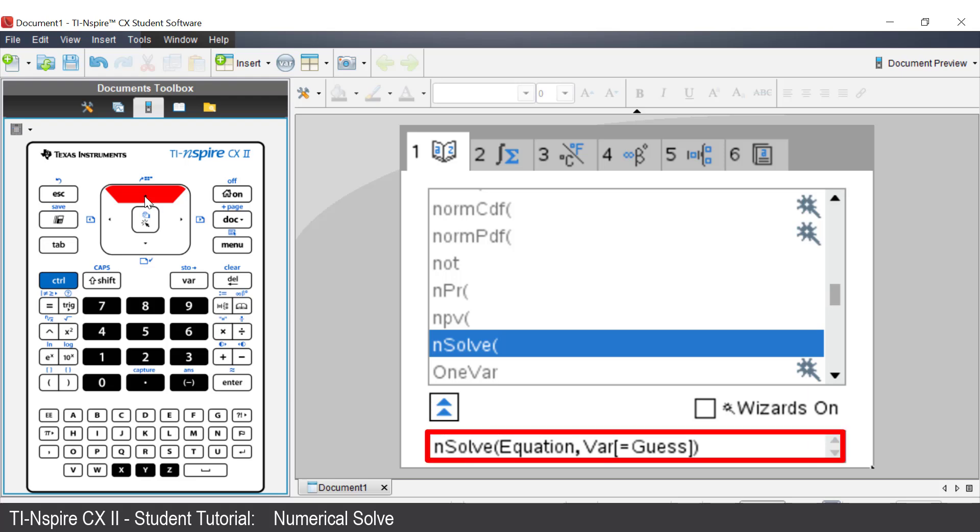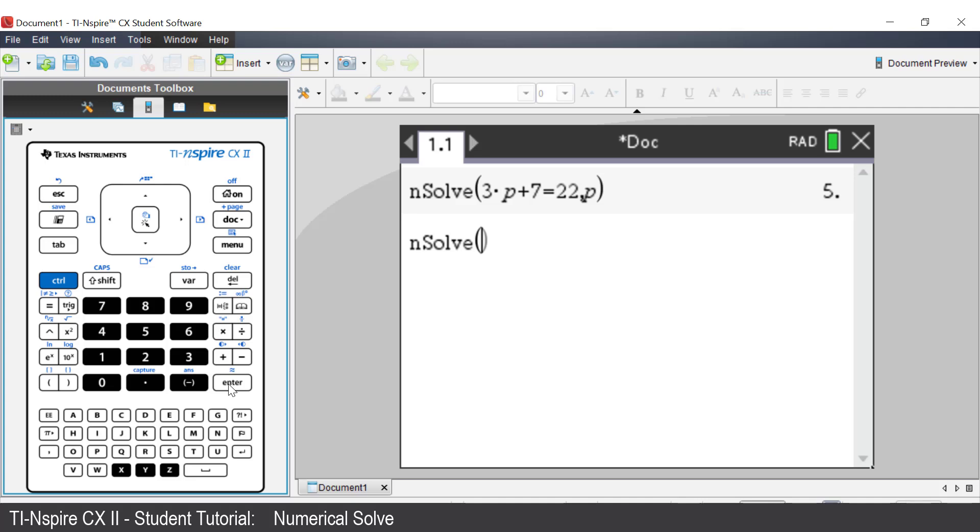At the base of the screen of the calculator, it shows the syntax required for numerical solve. Equation, comma, variable. The square bracket shows that an optional syntax can be used. In this case, comma, then a guess to start the process of numerical solve. Press Enter to send the command to the calculator application.